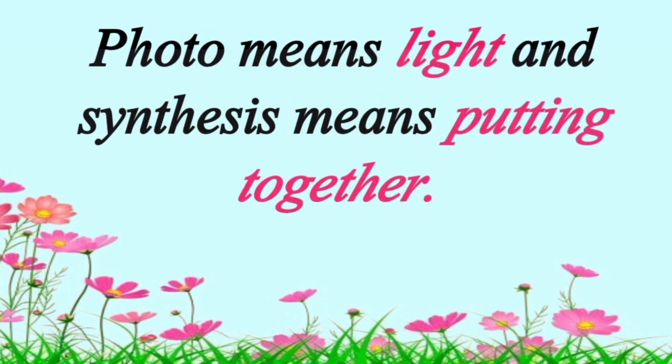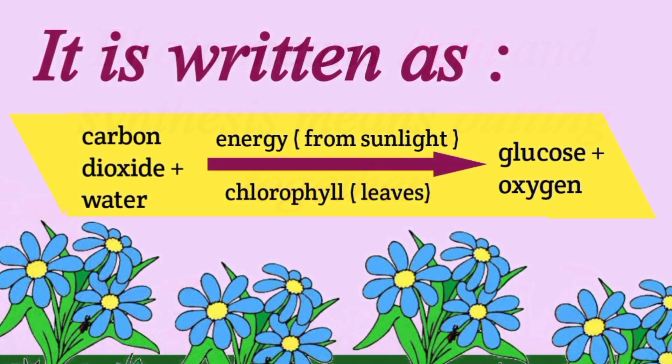Photo means light and synthesis means putting together. It is written as: carbon dioxide plus water, then energy from sunlight, which is trapped by leaves with the help of chlorophyll, forms glucose, and the plant releases oxygen.